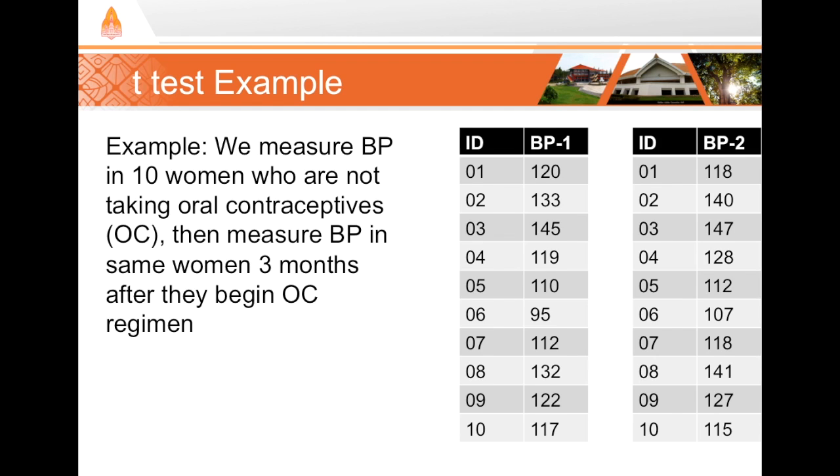This would be a before and after study looking at the effect on blood pressure of the oral contraceptive. Let's look at what we do to follow through the steps of our paired t-test. Here we have the women's ID numbers, and we can see their blood pressure before, BP1, measured in millimeters mercury, and BP2, the blood pressure after taking the oral contraceptive for three months.